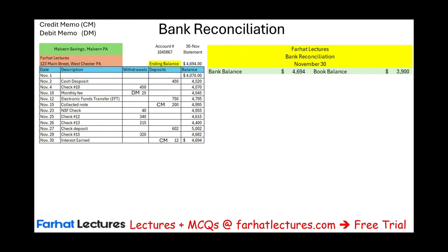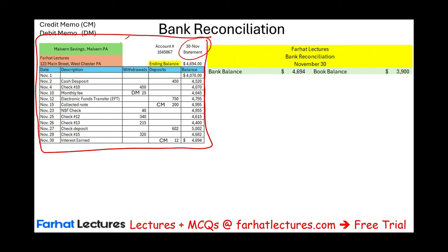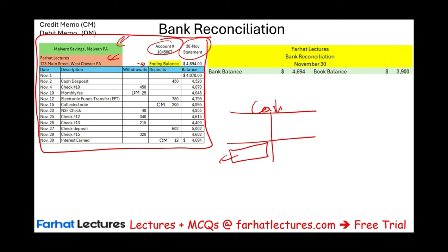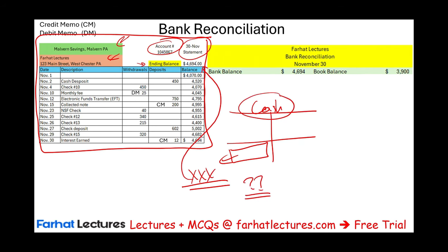Let's dive deep into the bank reconciliation. For this example, we are given a bank statement for the month of November — the name of the company, Farhat Lectures, the name of the bank, the ending balance, and the account number. The ending balance is $4,694. Now your cash general ledger could be showing some other number. Which one is the correct amount — is it your cash or is it your bank? You don't know until you prepare a bank reconciliation, because there are timing differences. This is the whole purpose of a bank reconciliation.